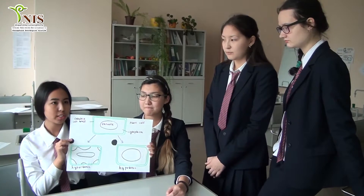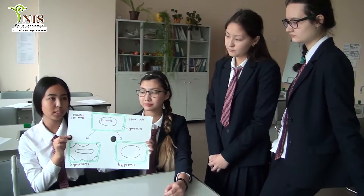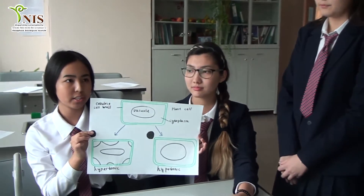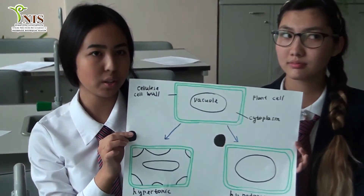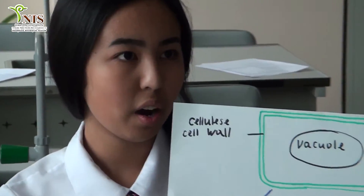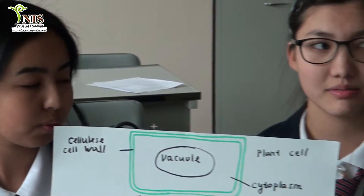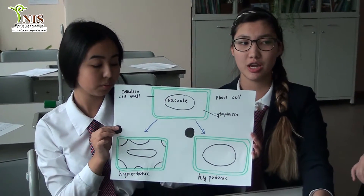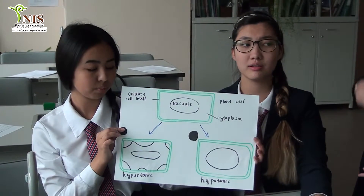Turgor is the pressure of a swollen cell pressed against the cell wall when the external solution is more dilute than the cell contents. The roles of turgor in plants include: mechanical support for soft non-woody tissue, changes in the shape of guard cells forming the stomatal opening between them, and enlargement of young plant cells to their mature size.